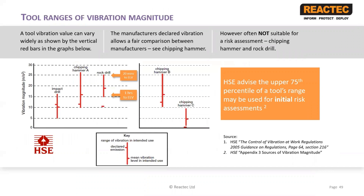It should be understood that all tools will range in their vibration magnitude. The graphic here illustrates work carried out by the Health and Safety Laboratories, published in an original version of their guidance L140 and subsequently replaced by Appendix 3 and tables of values for a number of tools. The graphic shows that for any particular tool type, the vibration magnitude will range from a minimal value to a maximum value, simply dependent on how the tool is being used or what the tool is being used for.